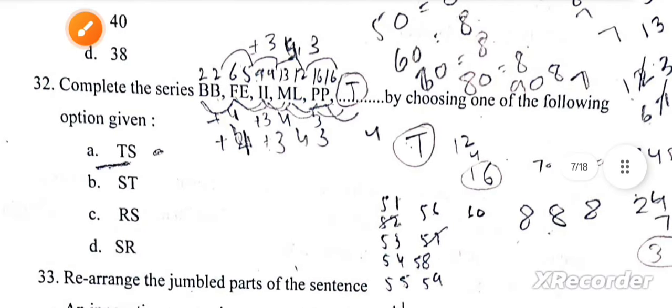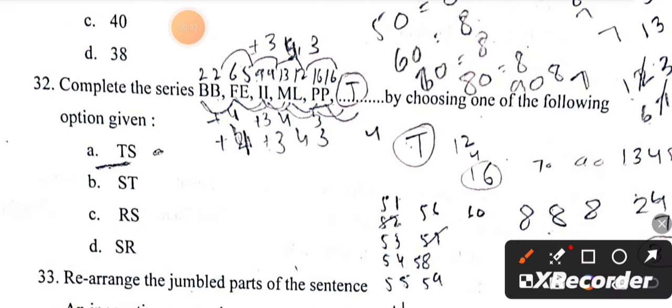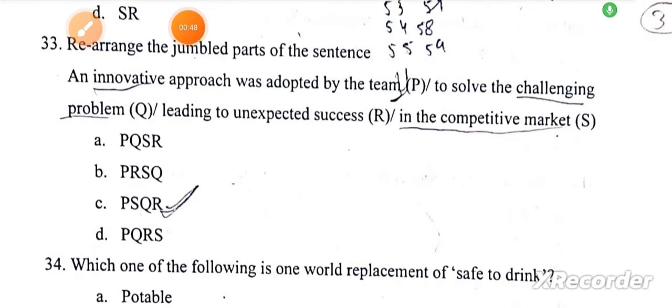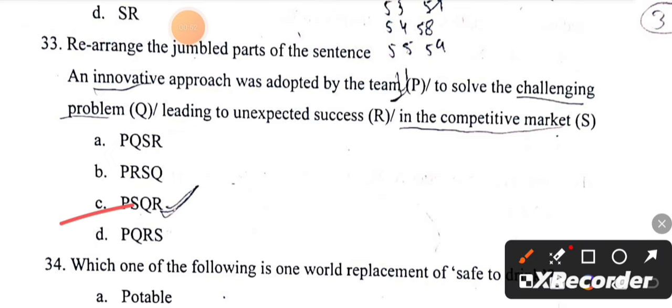Complete the given series. The correct answer is A. Question number 33, rearrange the jumbled words of the sentence. The correct answer is PSUR.